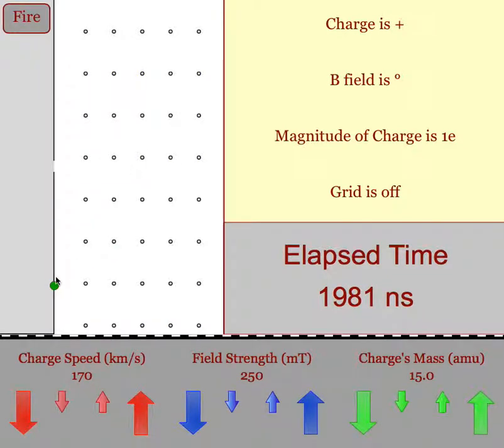Students can measure the radius of curvature of the path taken and the time elapsed for the particle moving through the magnetic field.